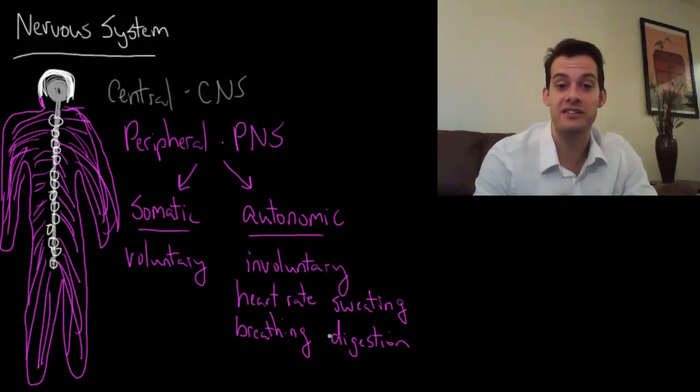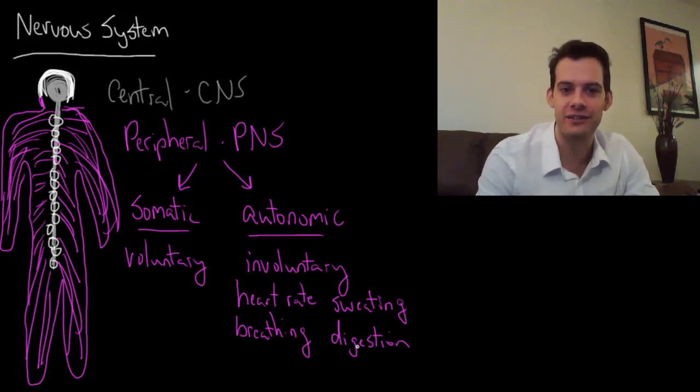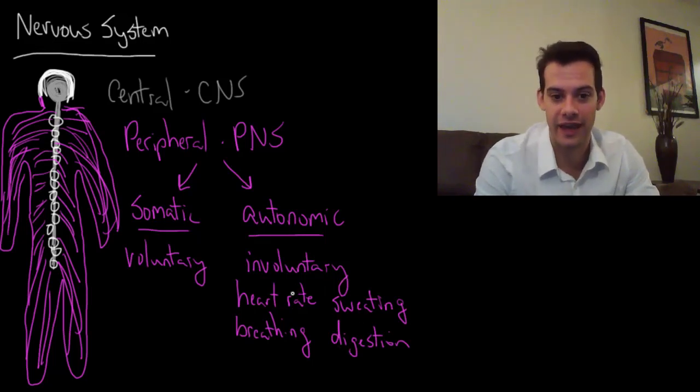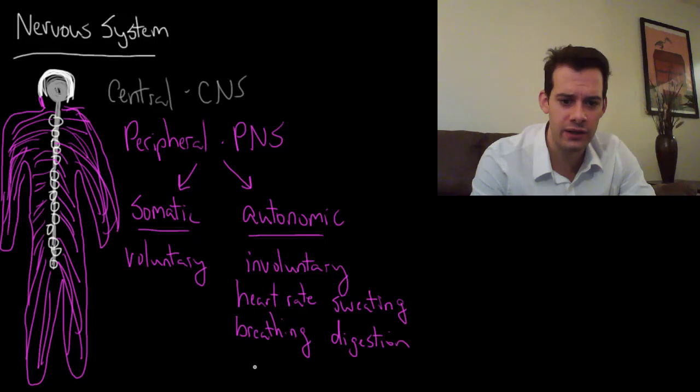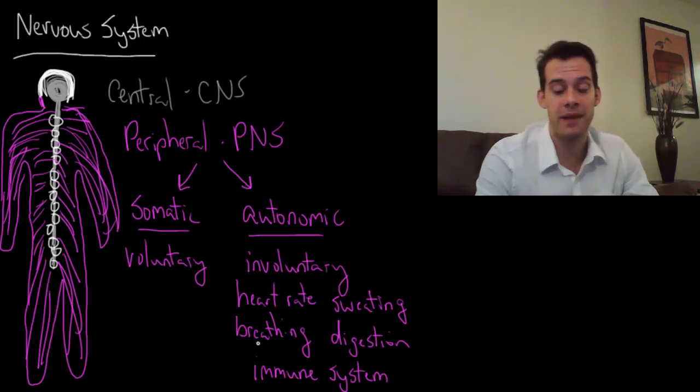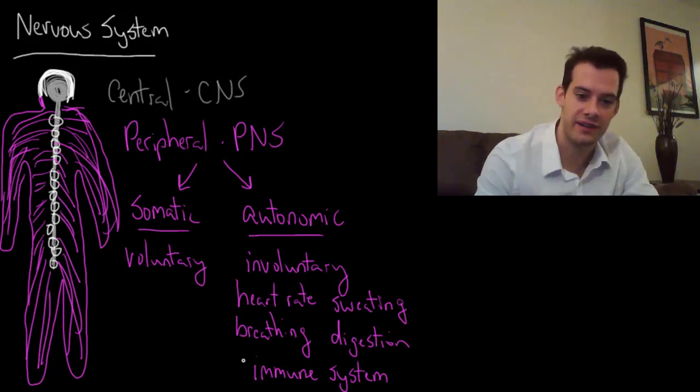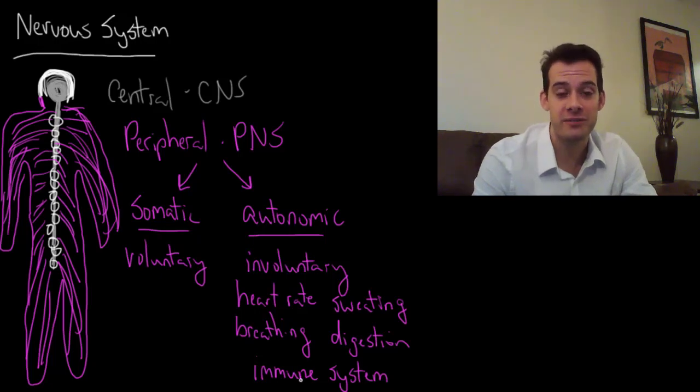This amazing process of transmogrification—this piece of cow, somehow my body knows how to take that and turn it into a piece of me, and luckily I don't have to consciously think about that. Also included would be things related to your immune system. If I have some bacterial invader or pathogen, I don't need to consciously think about releasing white blood cells to fight off this particular threat. My immune system just does this automatically.